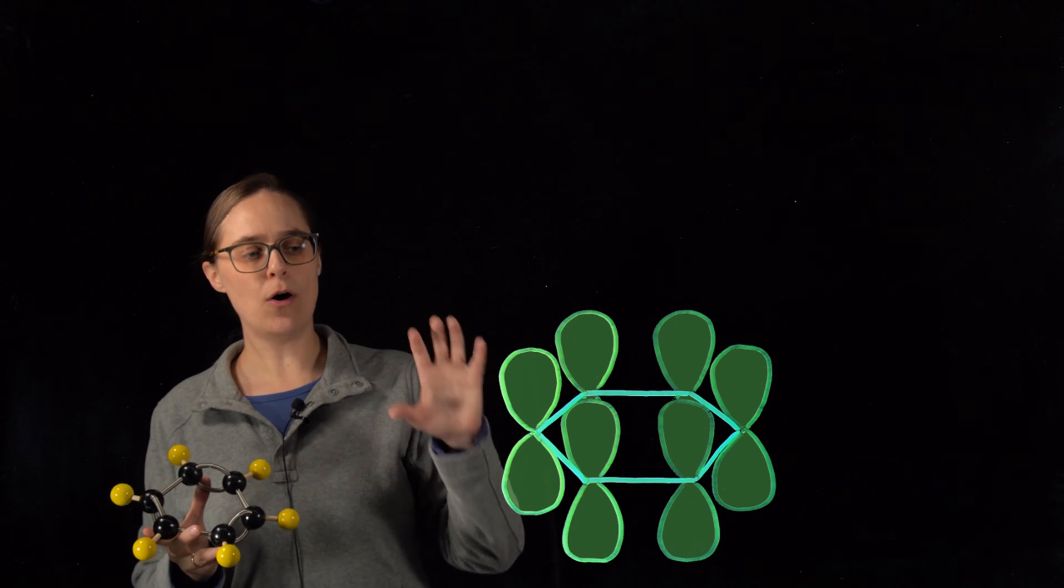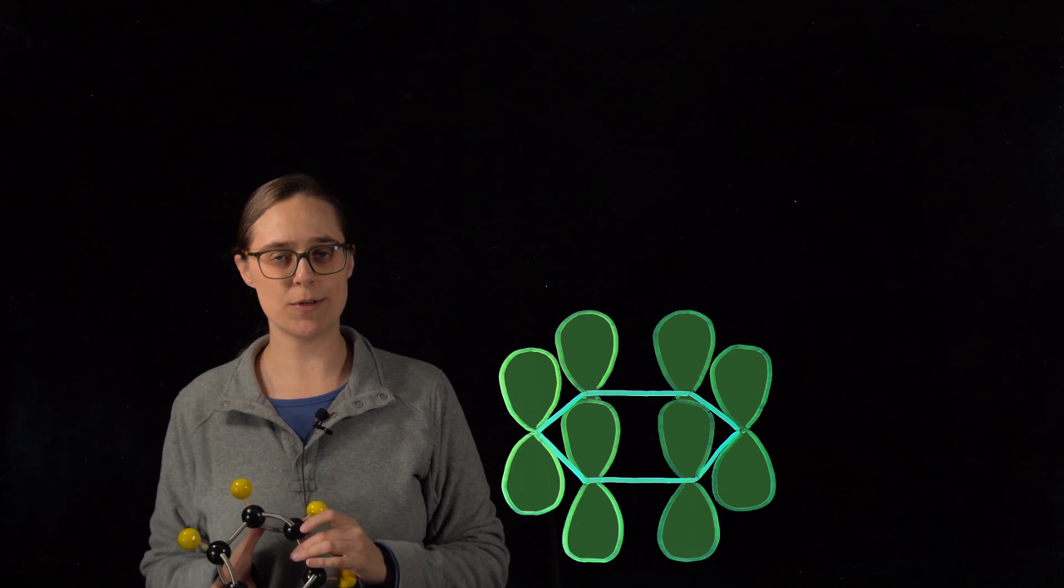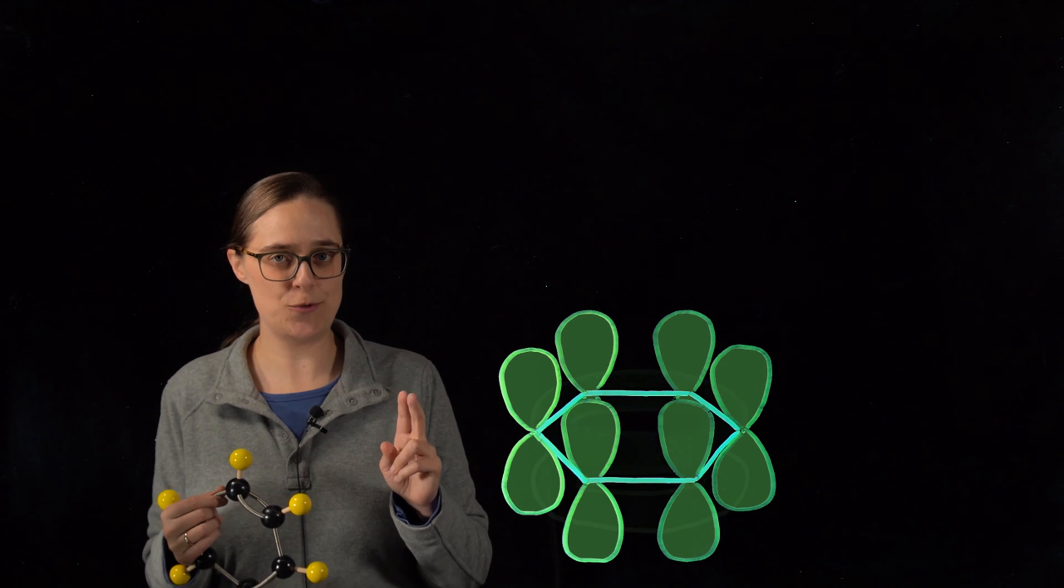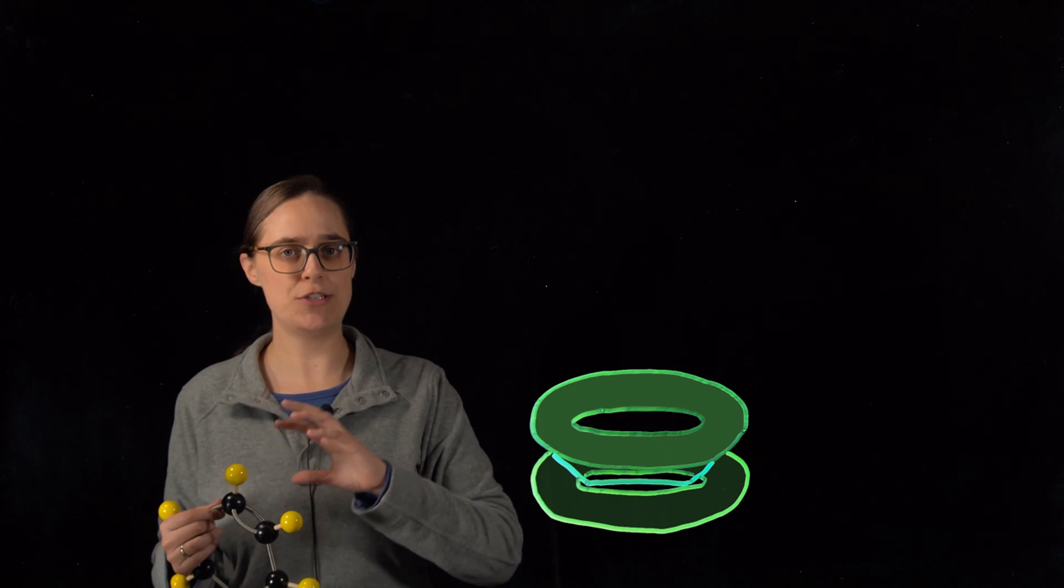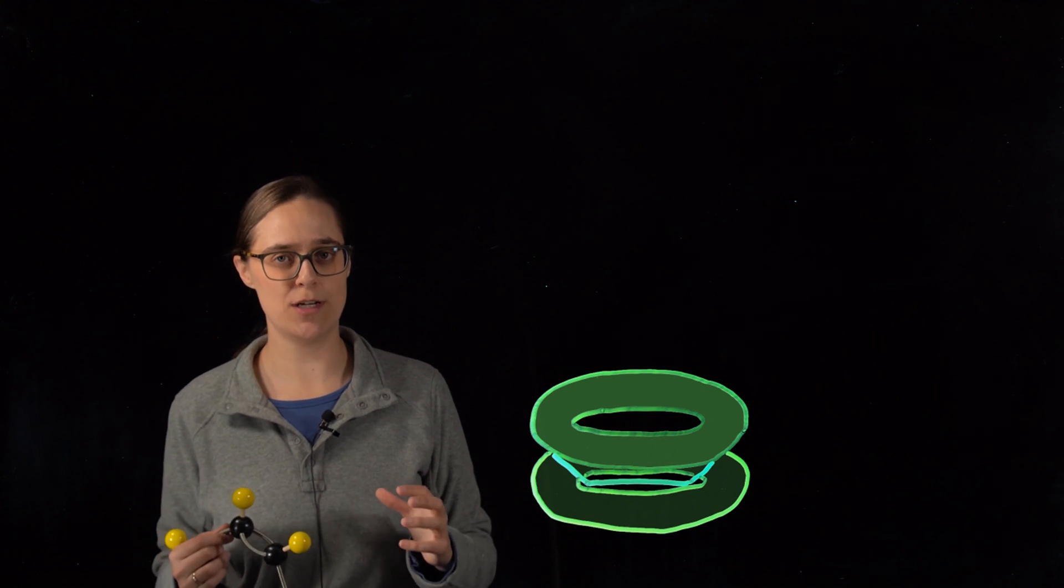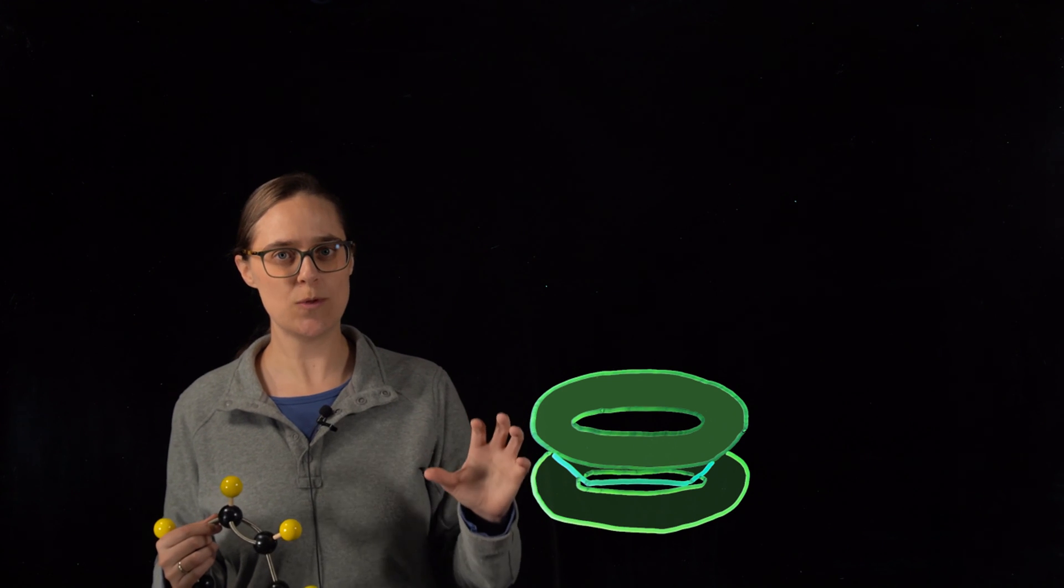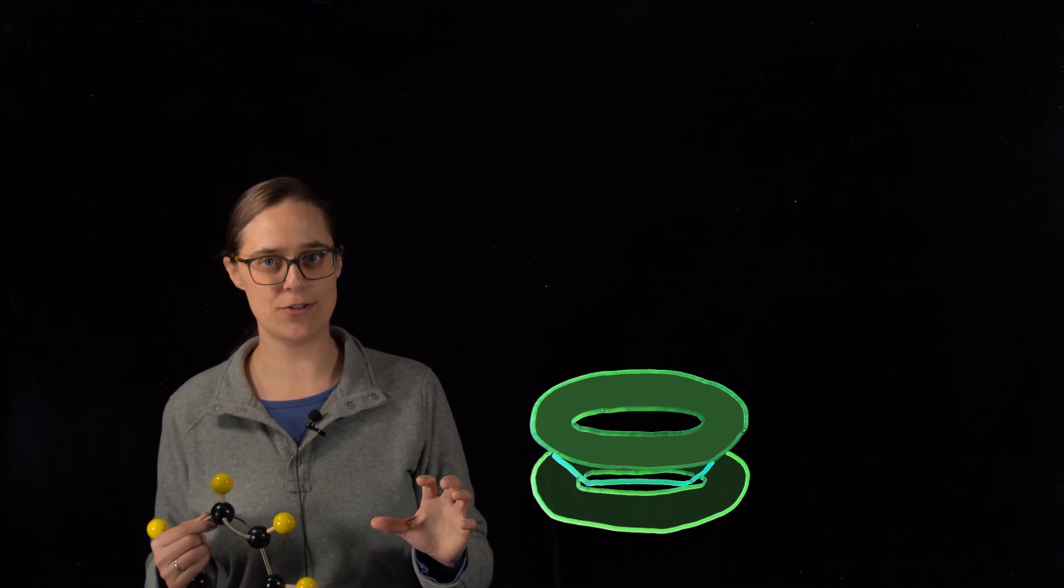In benzene, all six of these p orbitals can overlap each other. That means that these six pi electrons are not shared just between any two carbon atoms, but they are shared between all six carbon atoms. This is what is meant by delocalized electrons.